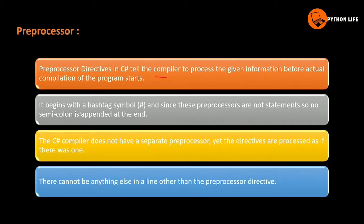Preprocessor directives begin with the hashtag symbol. They start with comments and double quotes. Since these preprocessors are not statements, no semicolon is appended at the end.